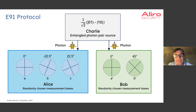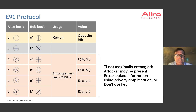Alice and Bob do something very similar as in the CHSH experiments that we just described, except that Alice randomly chooses from three different measurement bases instead of two. That leads to six possible combinations of measurement bases at Alice and Bob.